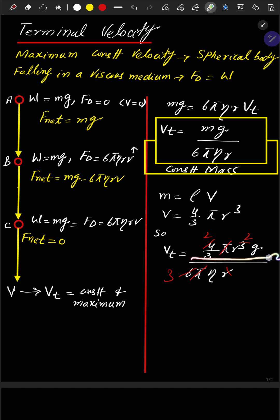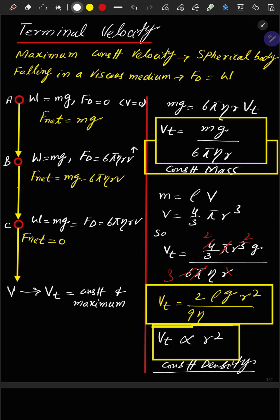Carrying out the necessary cancellation, we get the equation for terminal velocity: vt = (2ρgr²)/(9η). This is for constant density. The relation shows that terminal velocity is directly proportional to the square of the radius of the spherical object.